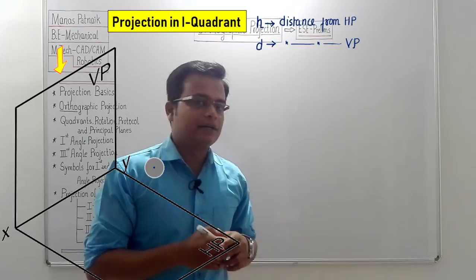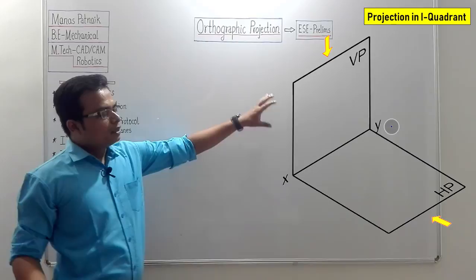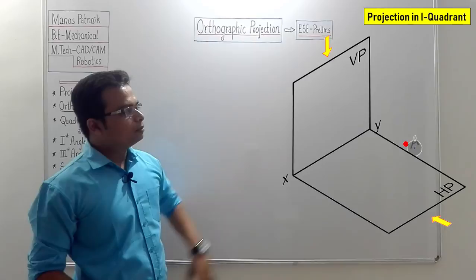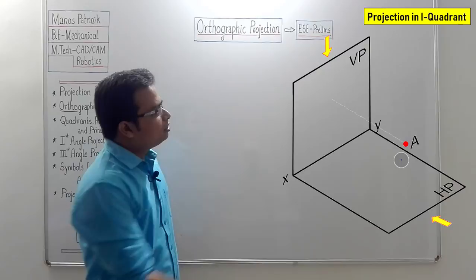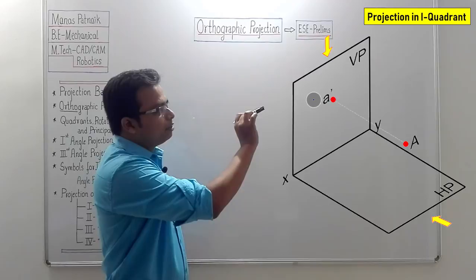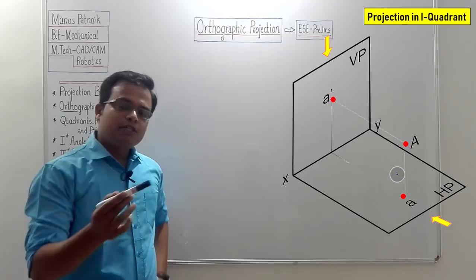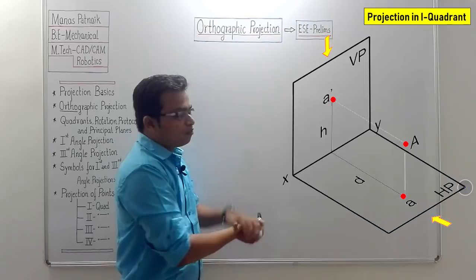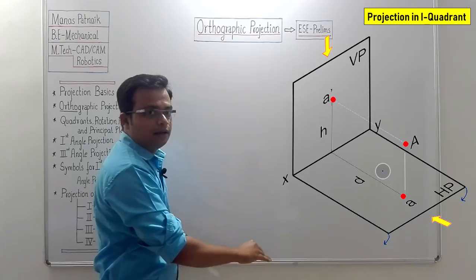Let's look at the first quadrant. The point is in front of VP and above HP. Viewing from the front, we get a' (a dash) — the front view — on the vertical plane. Viewing from the top, we get a — the top view — on the horizontal plane. Applying the rotation protocol: rotate HP clockwise by 90 degrees. The result is: a' (front view) above the XY line, and a (top view) below.